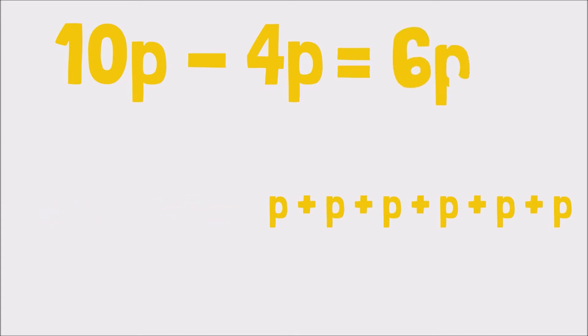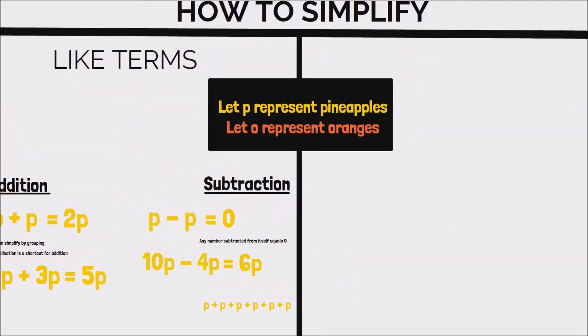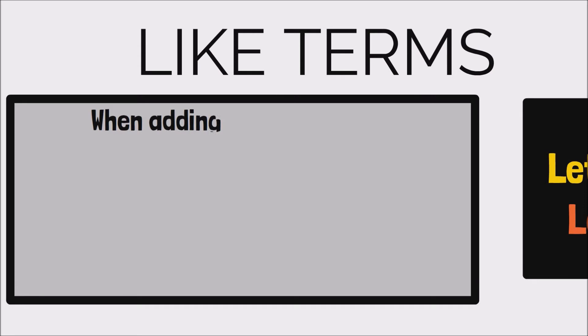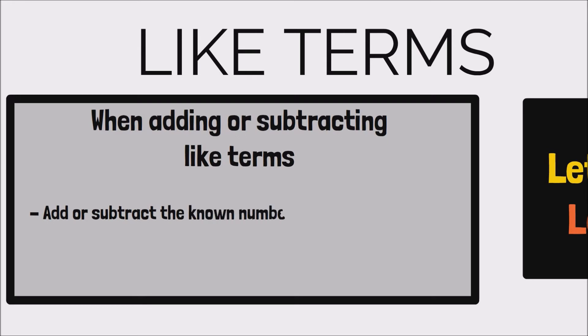The shortcut is this: no matter what the terms are, as long as they are like terms, to add or subtract, simply add or subtract the known numbers and then write the like term to get the final result. Now there is a way to multiply and divide like terms, but that's really left for high school, so we won't touch on it in this video.